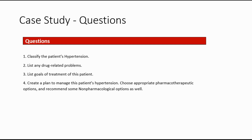Questions: 1. Classify the patient's hypertension. 2. List any drug-related problems. 3. List goals of treatment for this patient. 4. Create a plan to manage this patient's hypertension — choose appropriate pharmacotherapeutic options and recommend some non-pharmacological options as well.